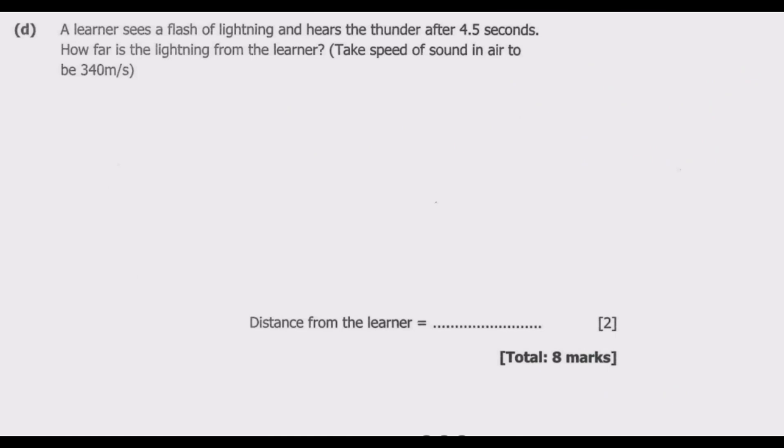Question D: A learner sees a flash of lightning and hears the thunder after 4.5 seconds. How far is the lightning from the learner? Take speed of sound in air to be 340 meters per second. We have to find the distance. We are given the speed and the time.